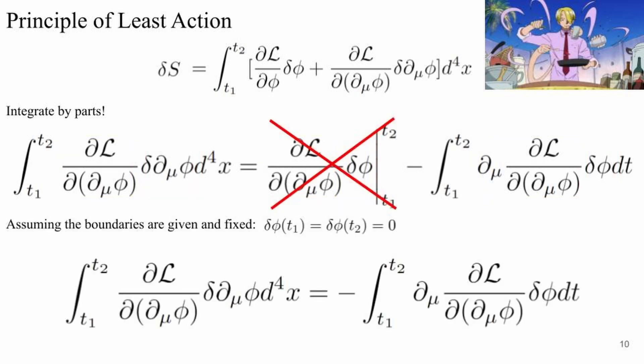When evaluating the first term, we make the assumption that the boundary conditions are fixed and given to us. This allows us to cancel out the first term entirely because the variation of phi evaluated at T1 and T2 must go to zero since the boundary points are both fixed.